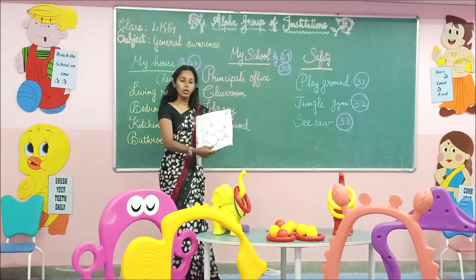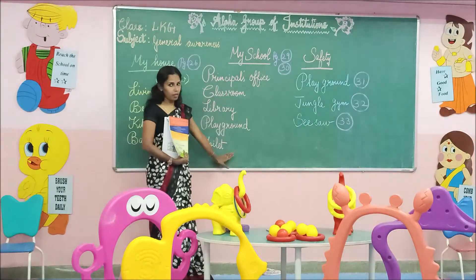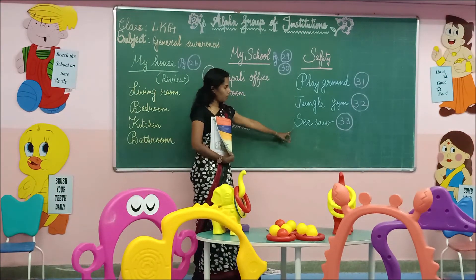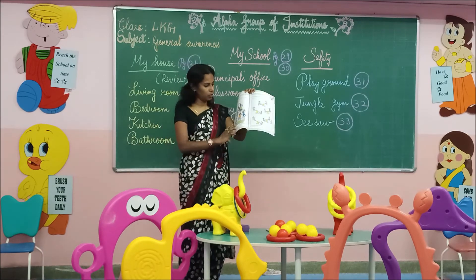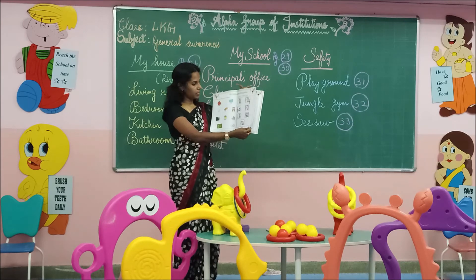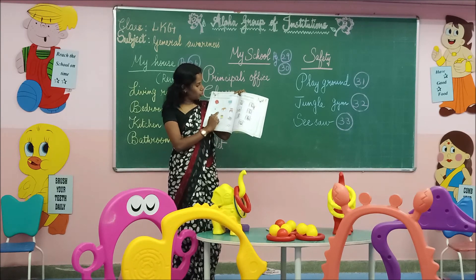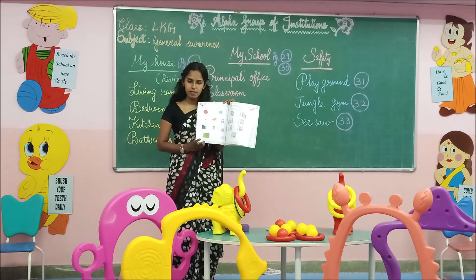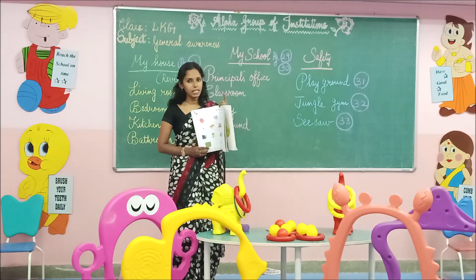Okay, children. Today we have discussed too many topics: My School — the rooms that are in the school — and Safety on the Playground while playing on swings, jungle gym, and seesaw. The only homework you have today is the activity on page number 30 — circle the things that are in your classroom. Finish the activity, take a picture, and send it to the room. Okay, children, thank you. See you in the next class.